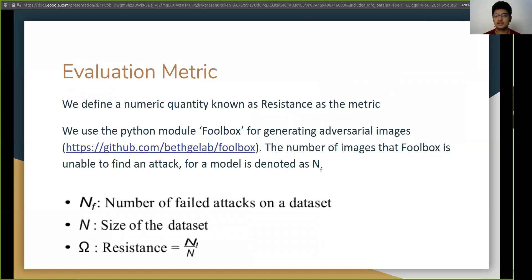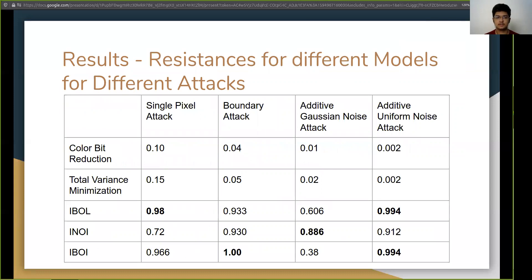Now for evaluation we need a single number to evaluate between models or to evaluate amidst models we need a single number and for that we define resistance as our metric. Now resistance is the fraction of failed attacks on a dataset. We use the python module foolbox for generating adversarial images. Now let me give an example of a boundary attack. So let's say I am having an image and a model and then I use foolbox to generate an adversarial image using the boundary attack. Now if the model is properly trained, the foolbox will not be able to identify an image which misleads the model and that is the case of a failed attack. We add all such failed attacks and divide by the size of the dataset and thus we have a quantity, a single quantity resistance. And we get really good results using our three models.